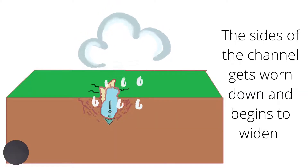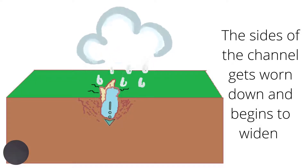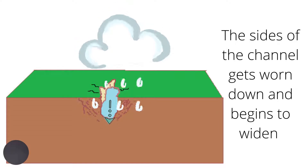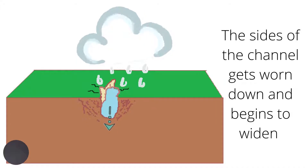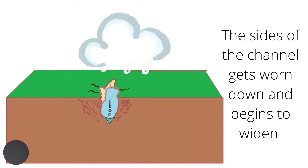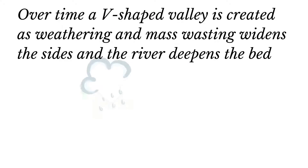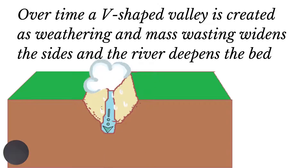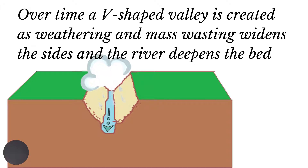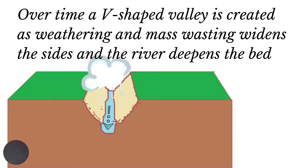As the sides are exposed, they are going to come under the impact of denudation processes, such as weathering and mass wasting, and this will cause those sides to be widened. Over time, a V-shaped valley is created as weathering and mass wasting widens the sides, while the river itself deepens the bed by vertical erosion.